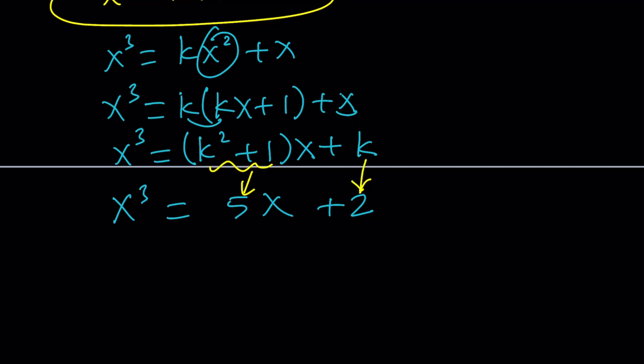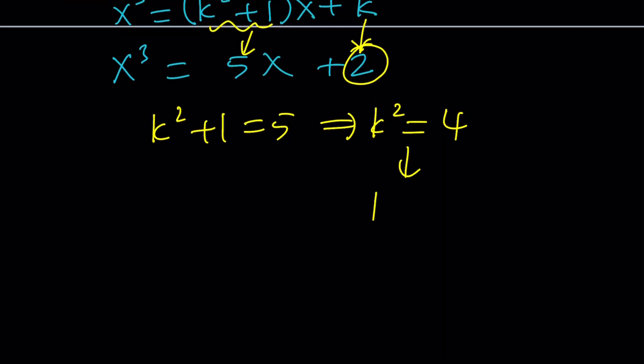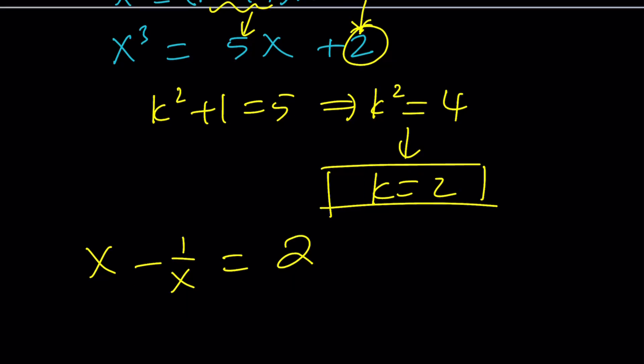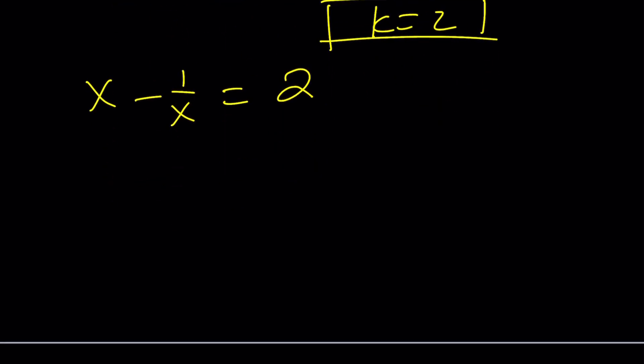We have a system from the first equation. We get k squared plus 1 equals 5, so k equals plus or minus 2. But the second equation gives us k equals 2, so we have to go with that. Since we were looking for k, the answer would be 2 in this case. The first method basically sets x minus 1 over x equal to a constant, and then expresses x cubed in terms of k. Let's take a look at the second method.